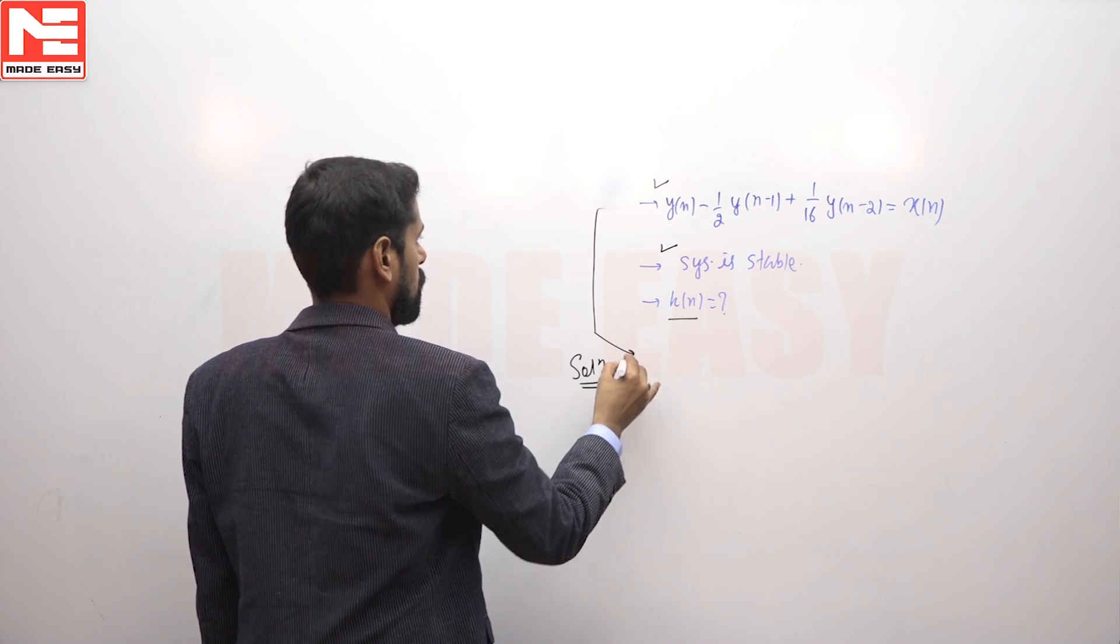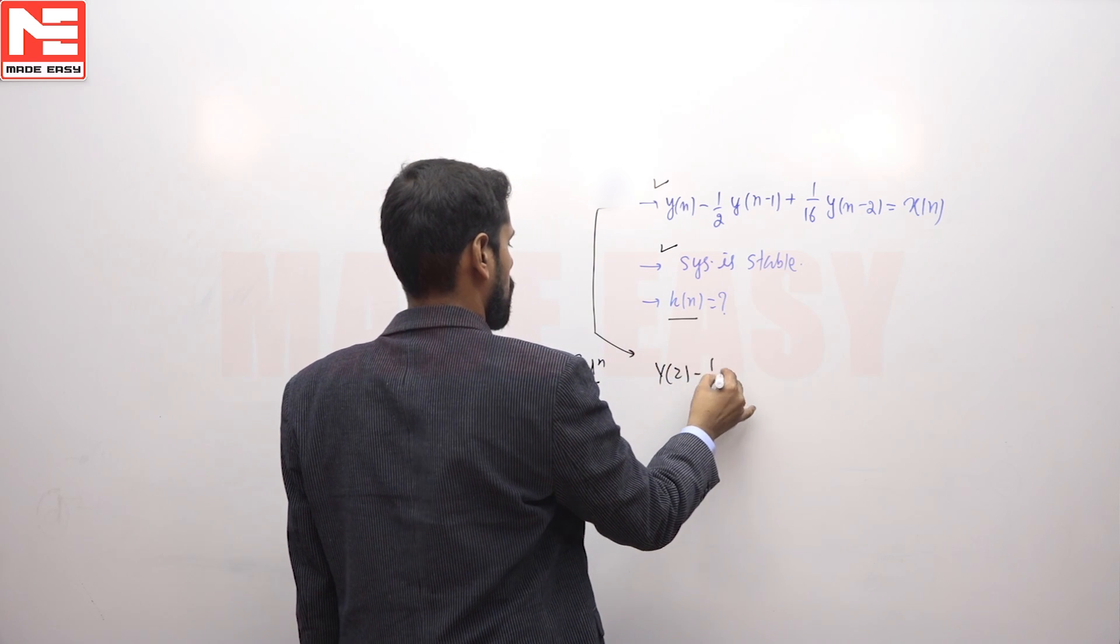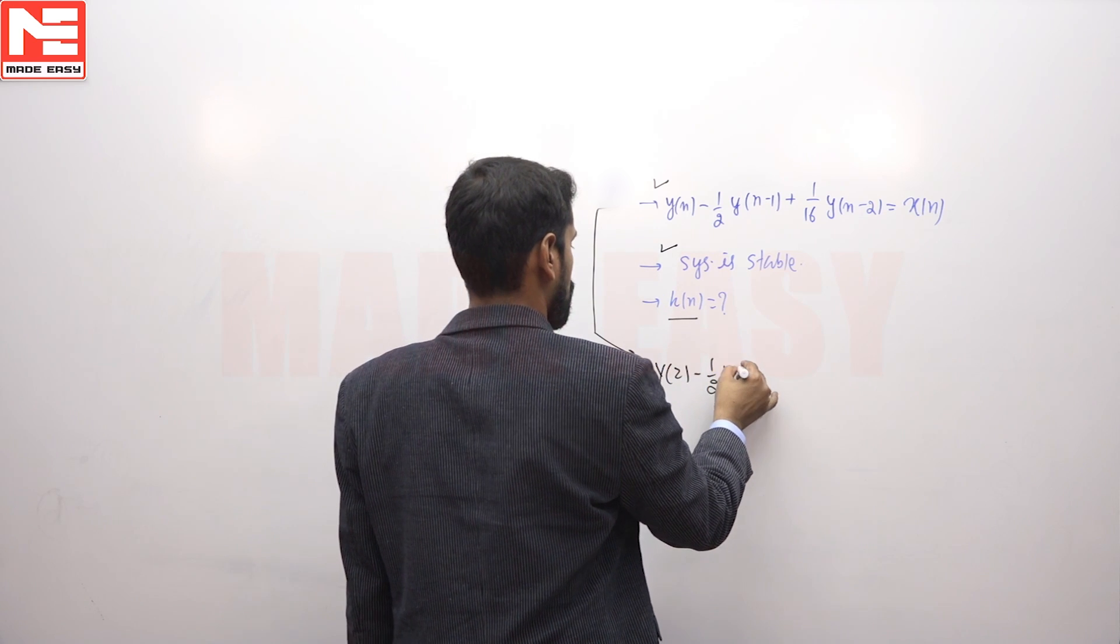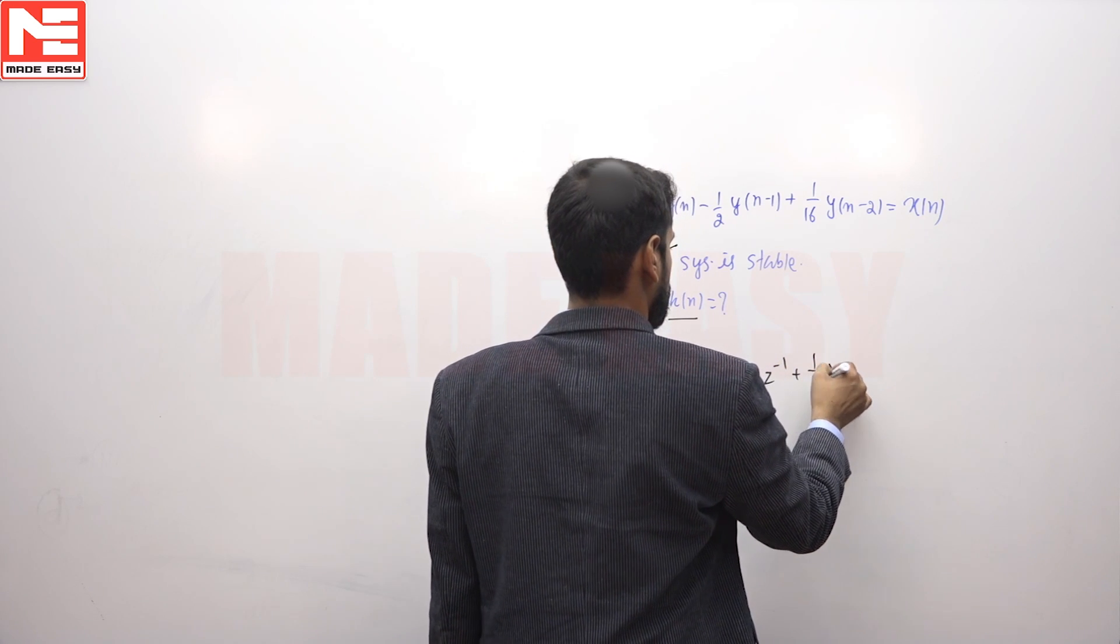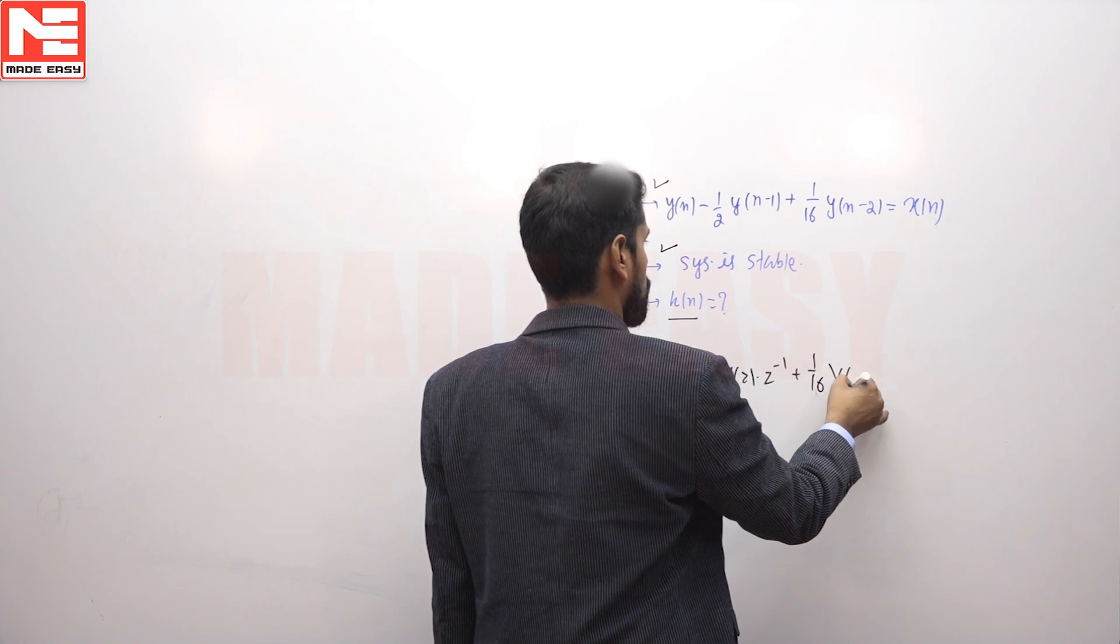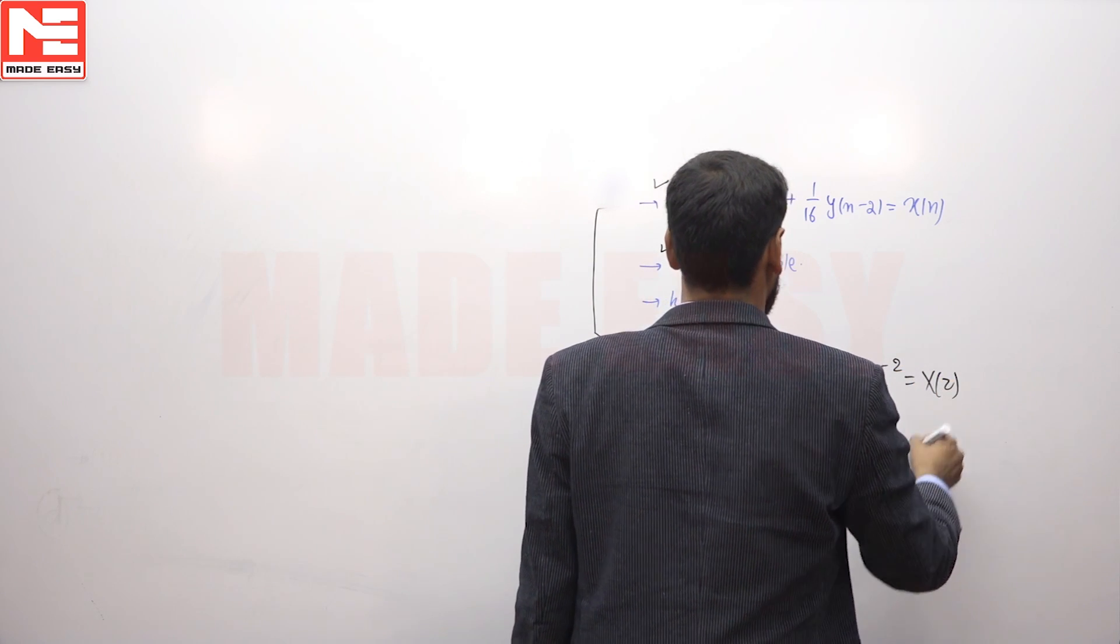By applying Z-transform on the given difference equation, y(z) minus 1/2 y(z) times z inverse plus 1/16 y(z) times z to the power minus 2 will be equal to x(z).